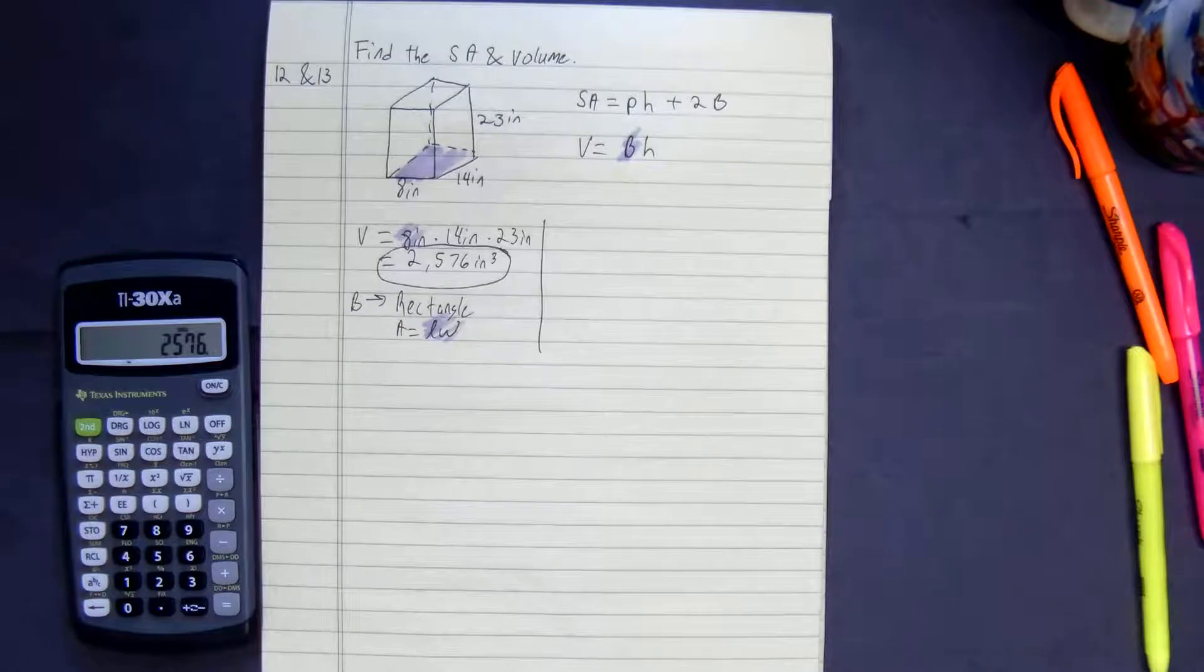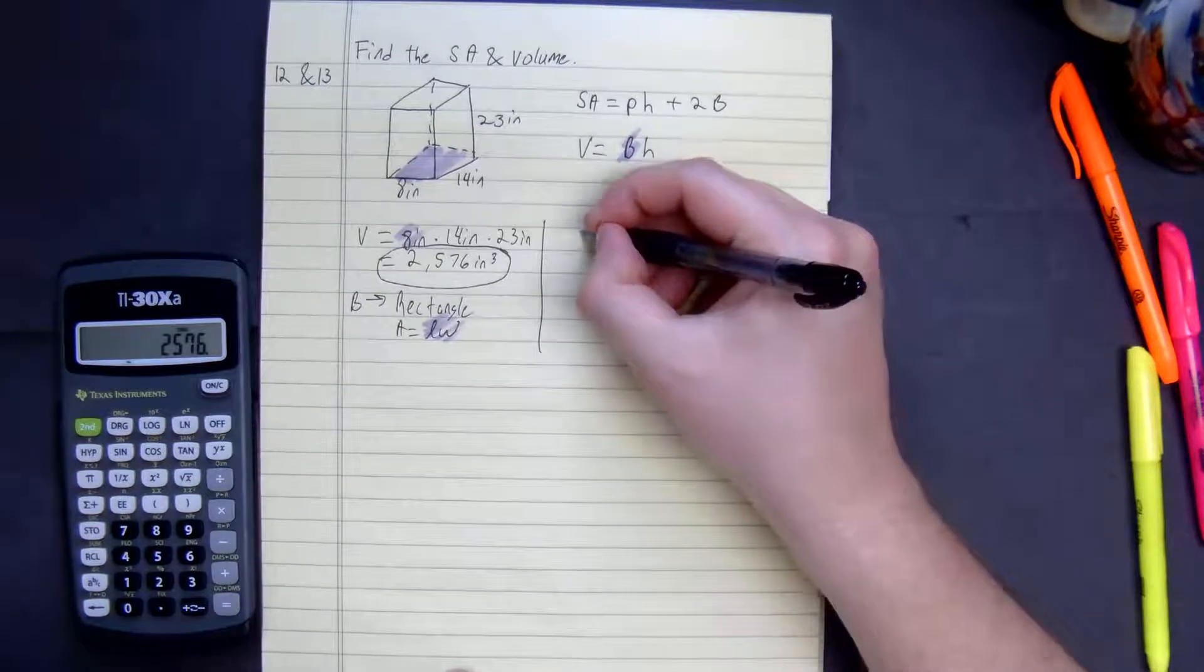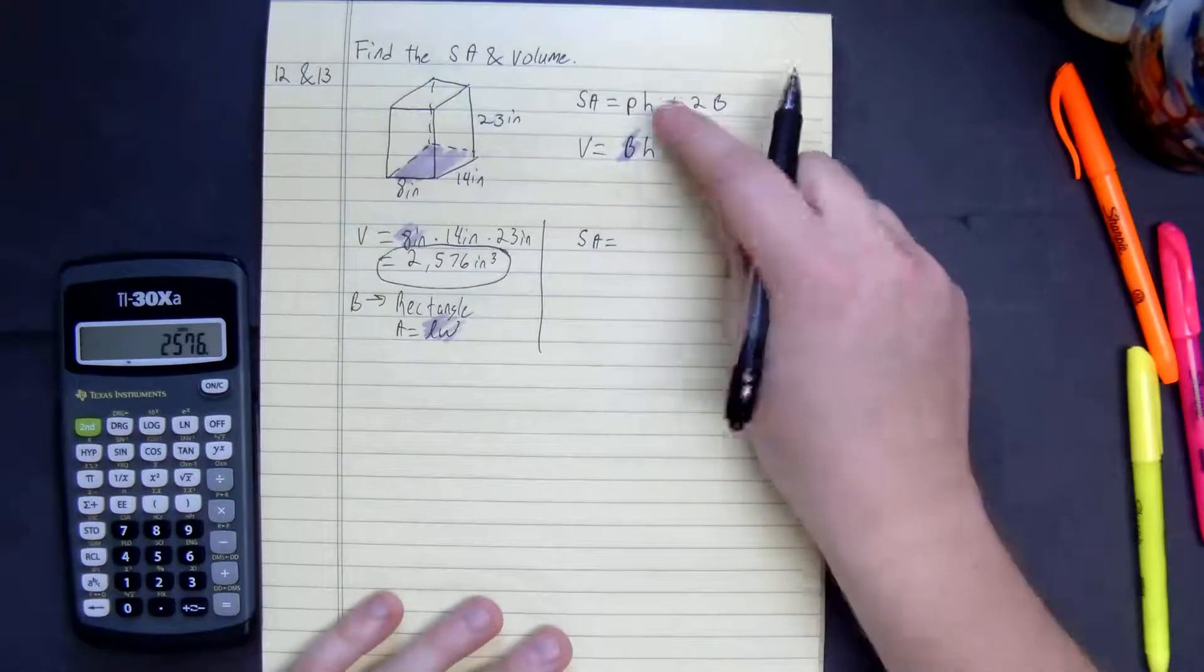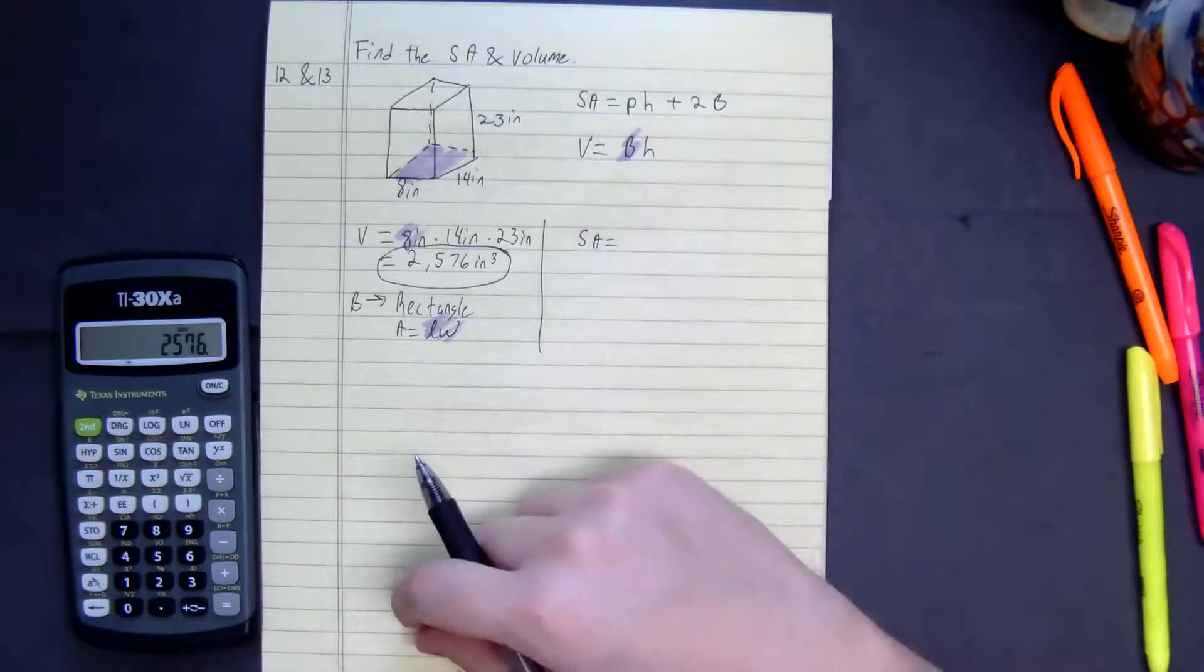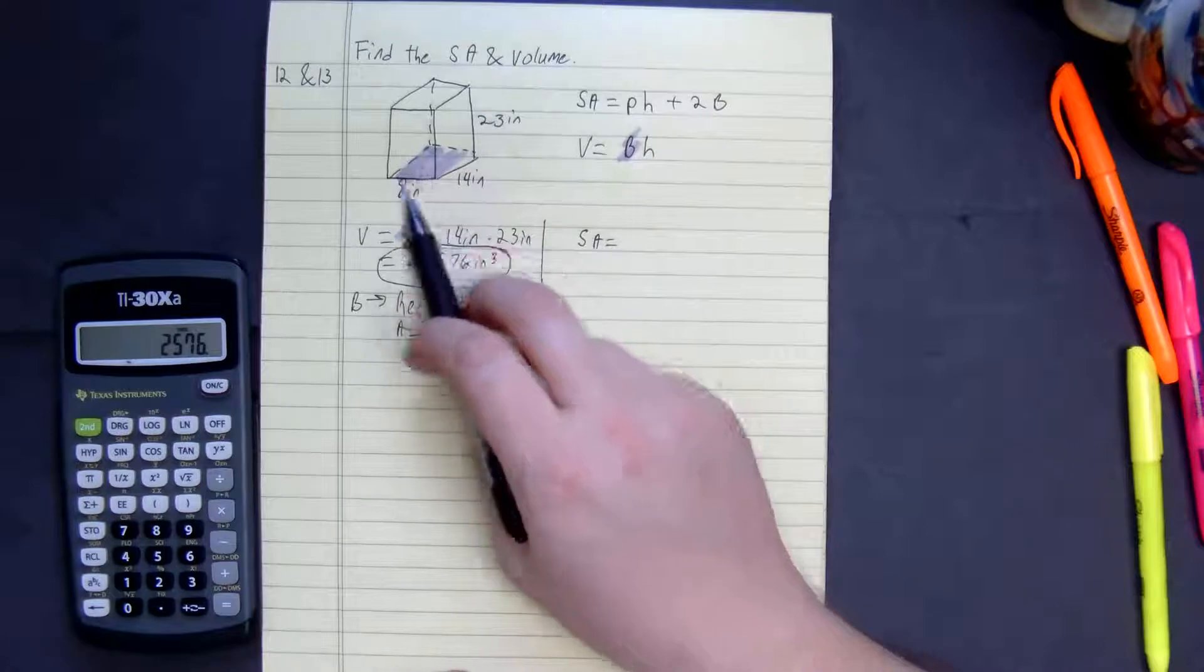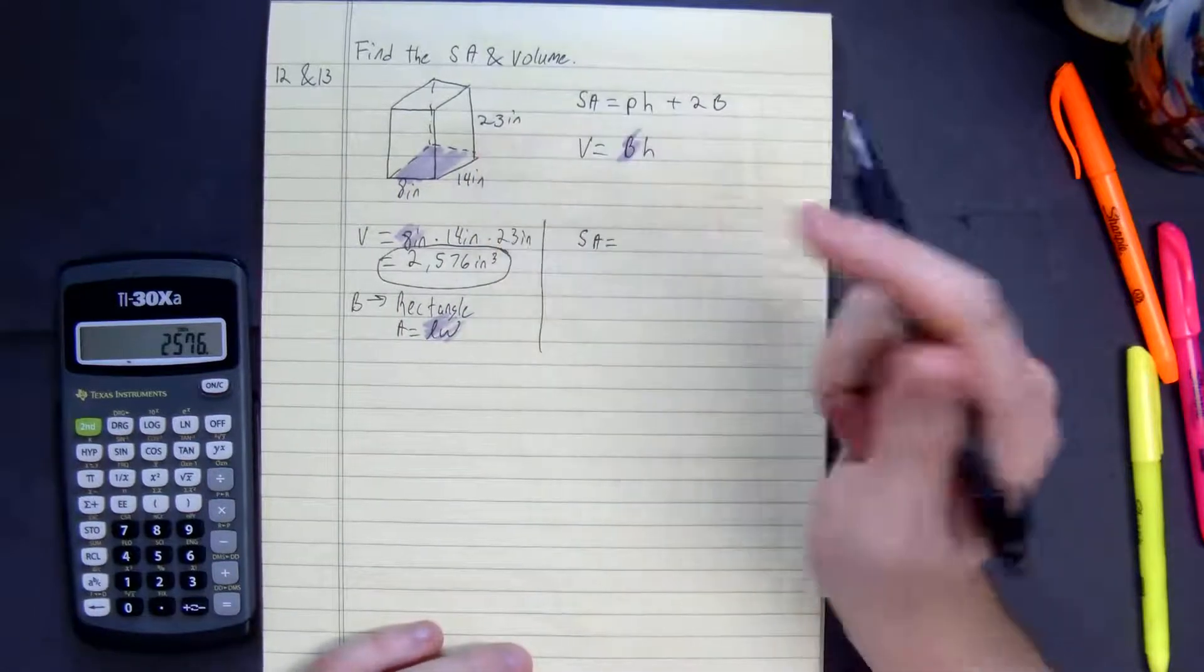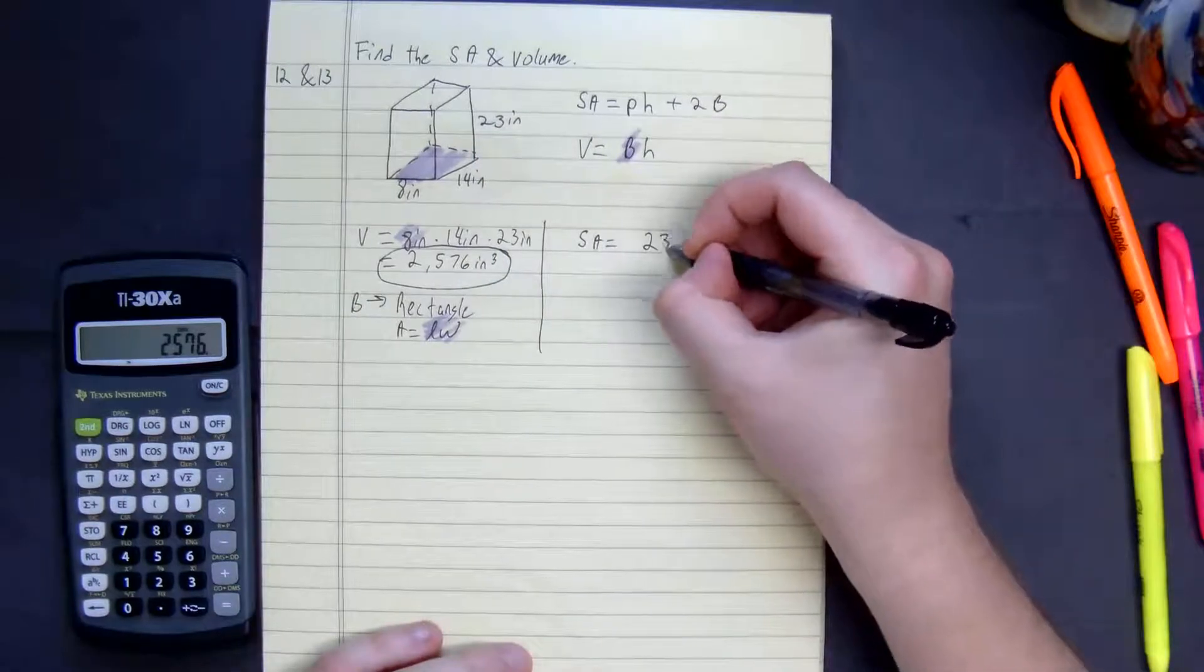Let's figure out the surface area. So surface area is equal to the perimeter. Perimeter would just be all this added up. The height of the shape, we're going to say it's 23 to be consistent, 23.